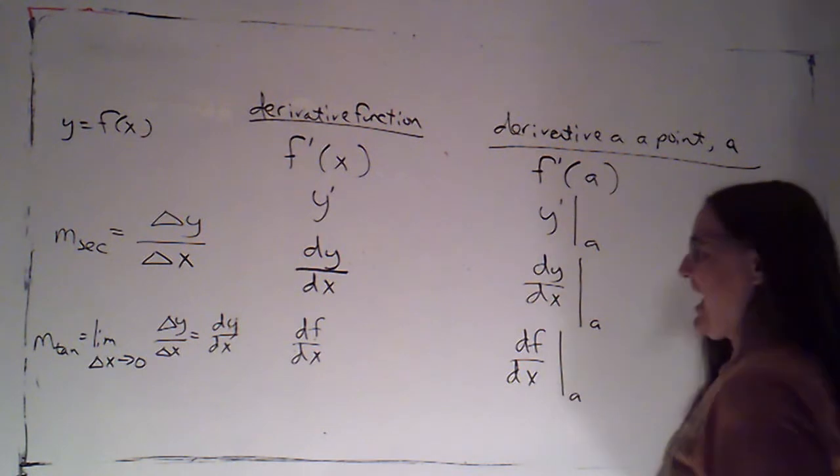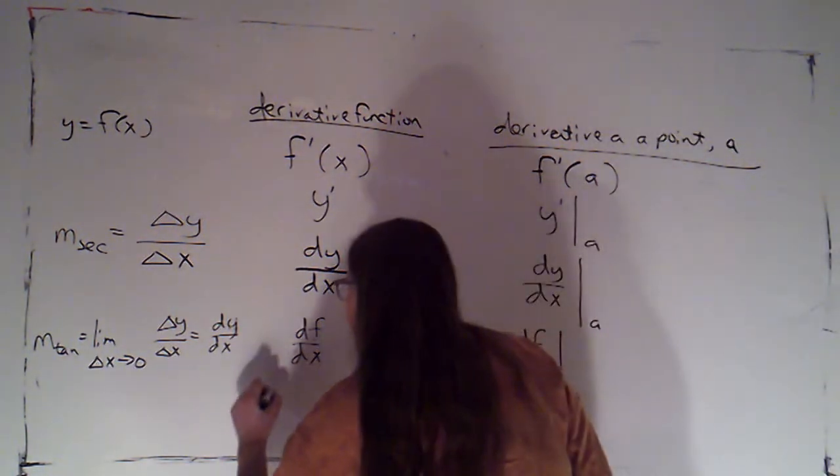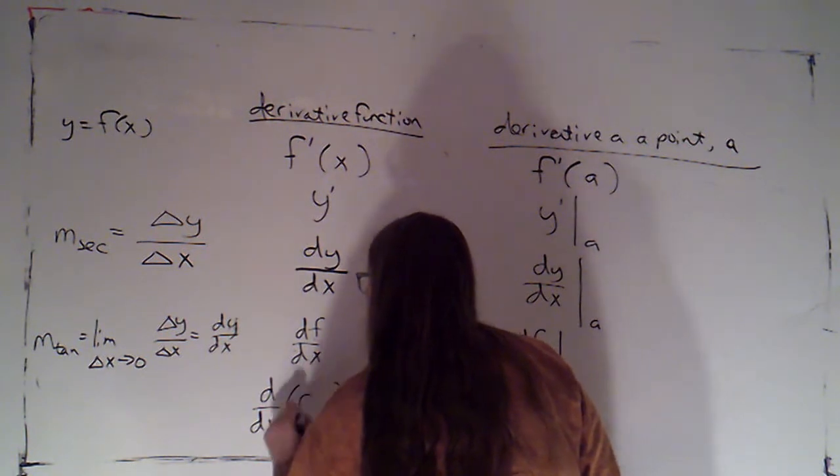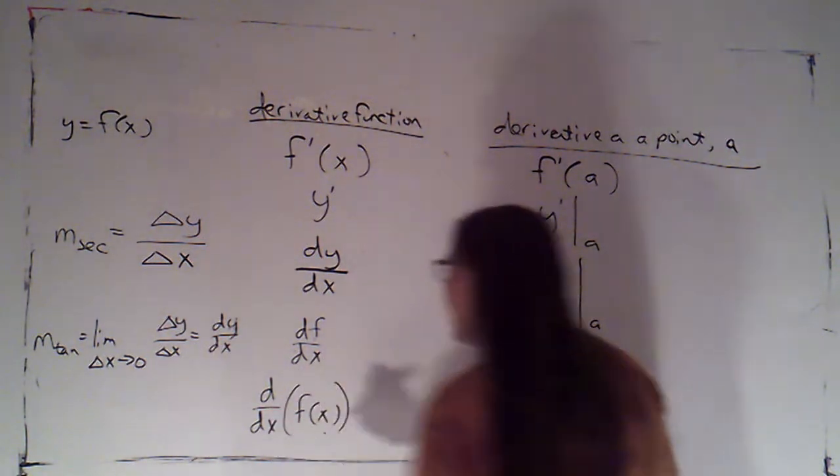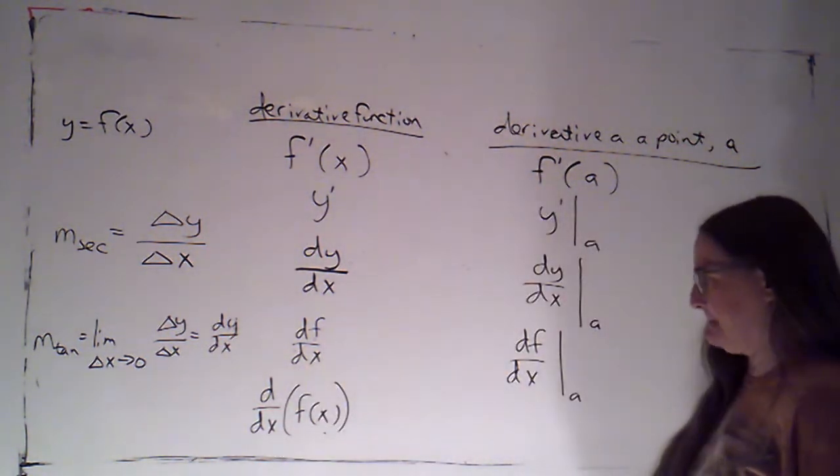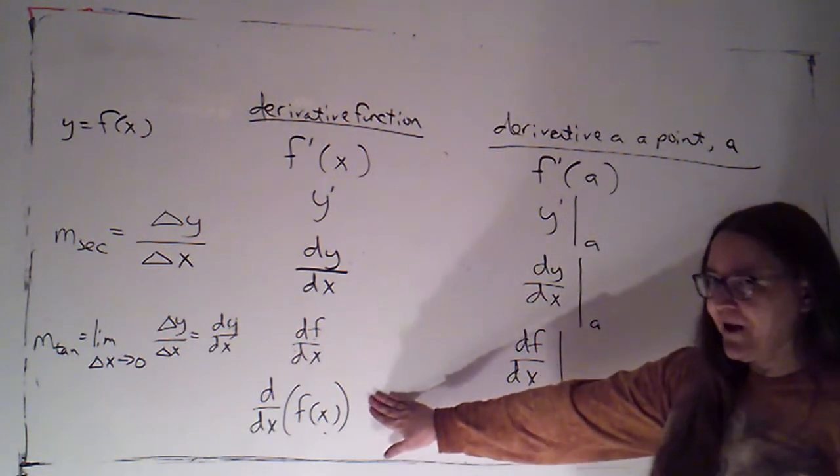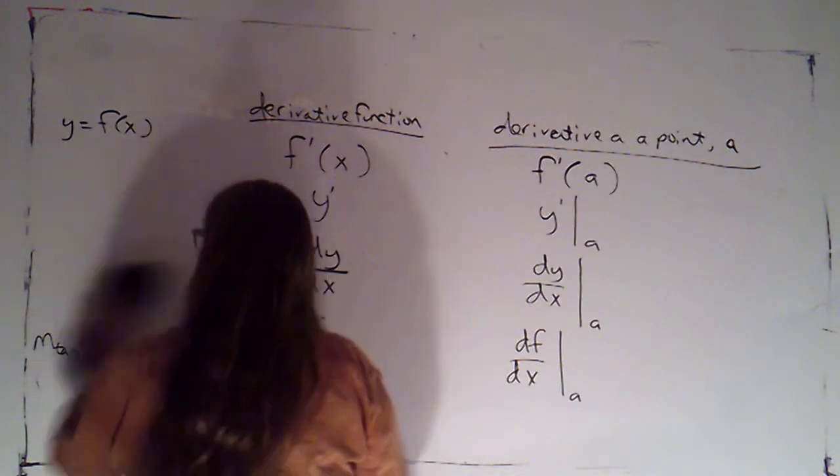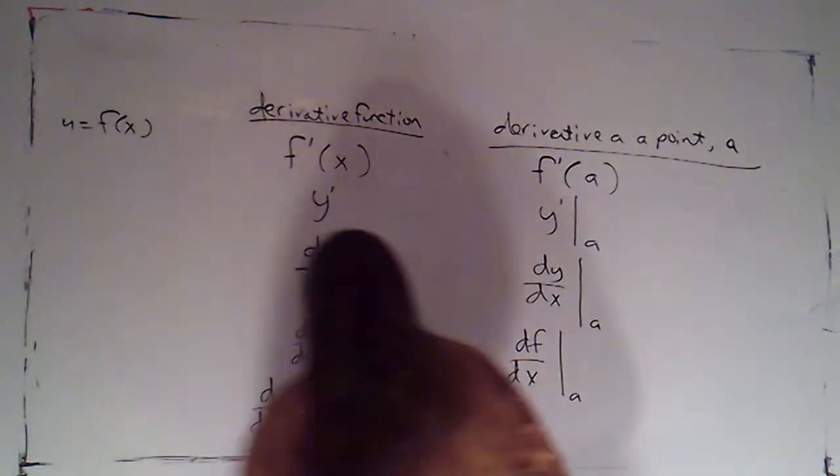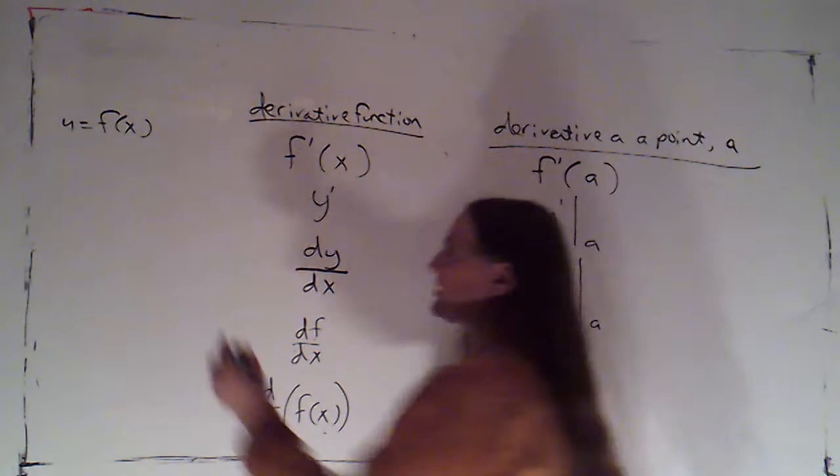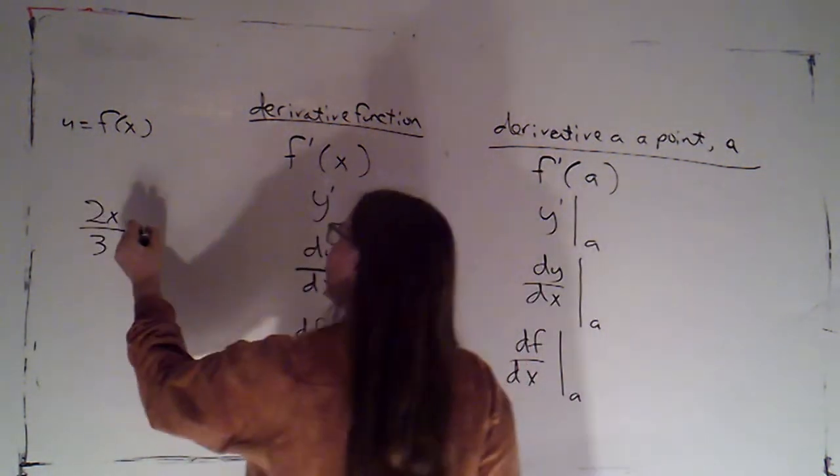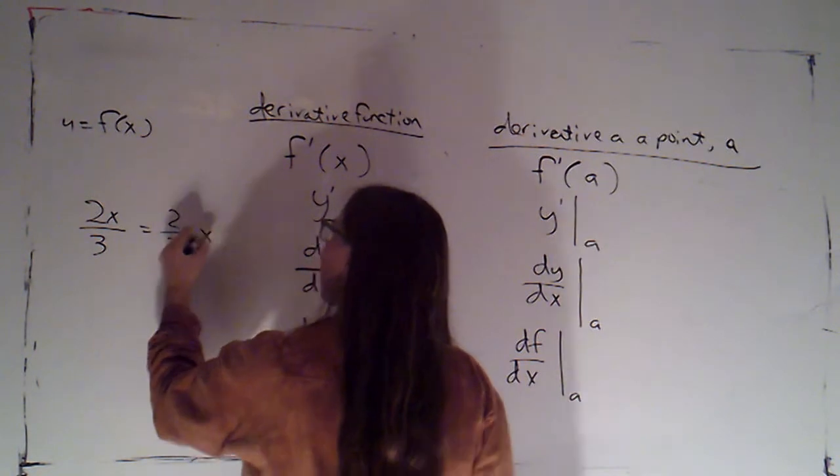Another option that I have is that I can write d by dx of f of x. Now, let me talk about this one for a little bit. We're sort of used to the notion that if I have a fraction, like if I have 2x over 3, that's the same as 2 thirds x. I can take this part of the top and I can slide it off to the side and write it on the right-hand side.